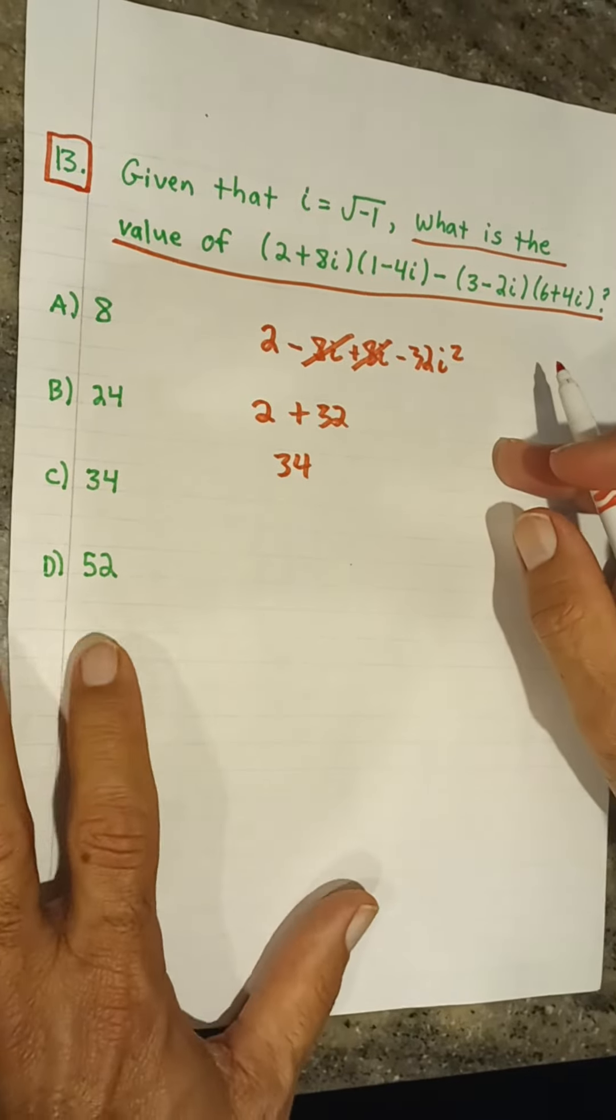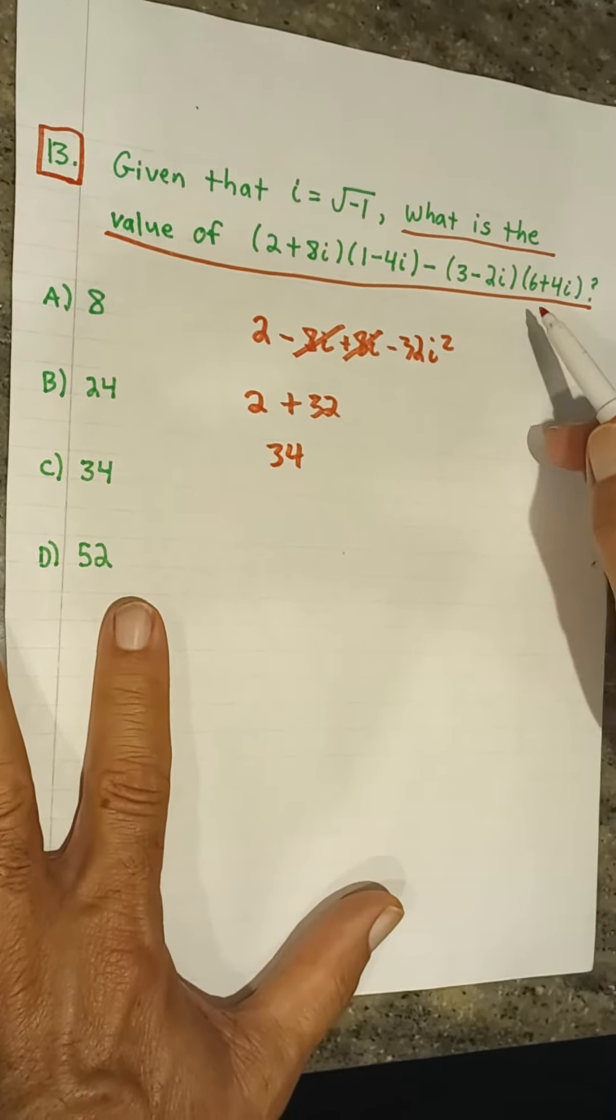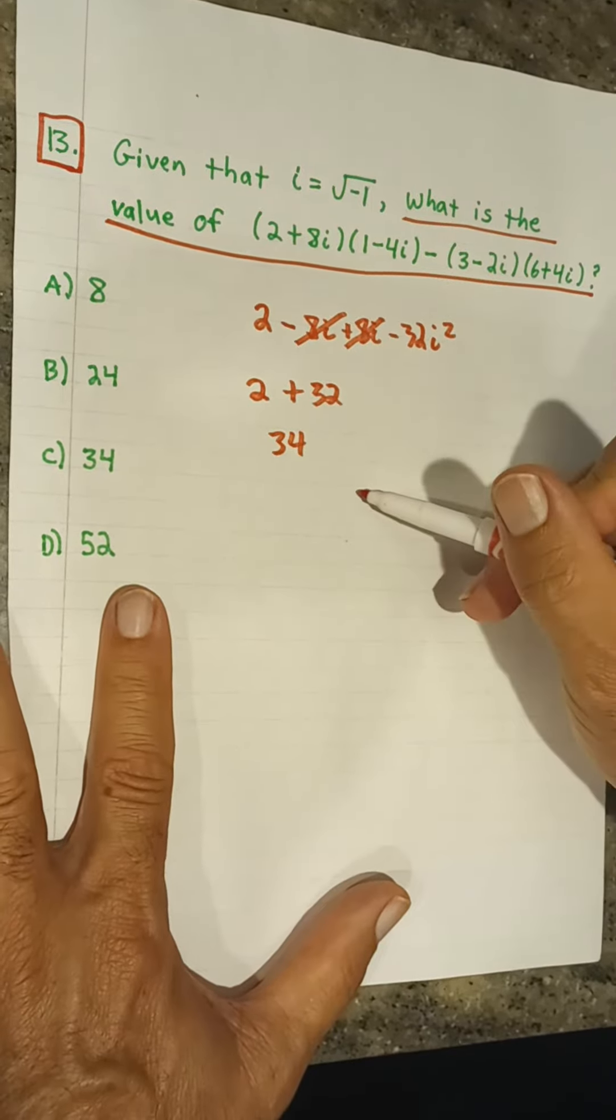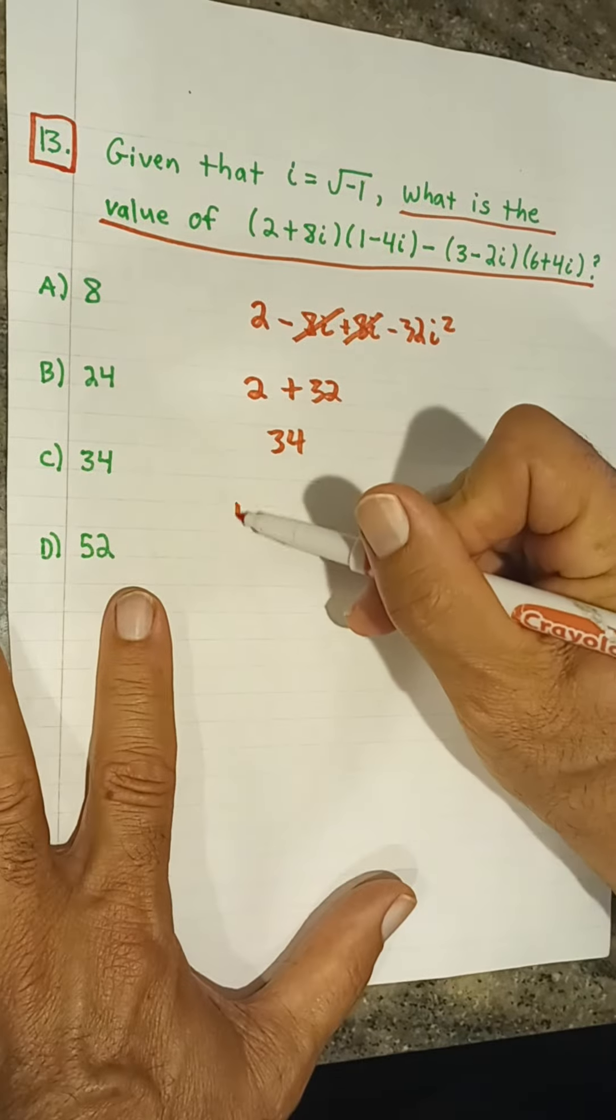Let's take a look at the second set. Here we have 3 minus 2i times 6 plus 4i. So let's write this down. We foil first. 3 times 6 is 18.